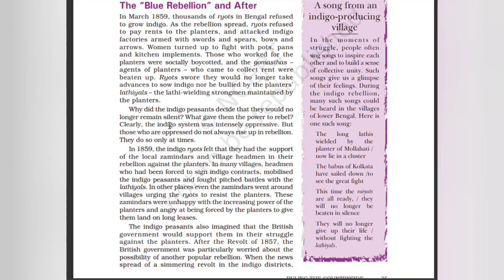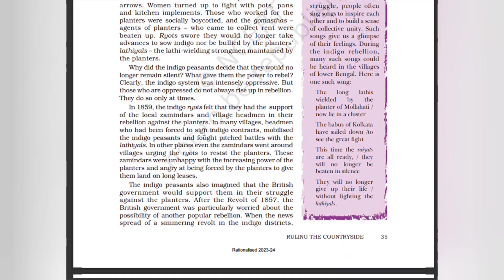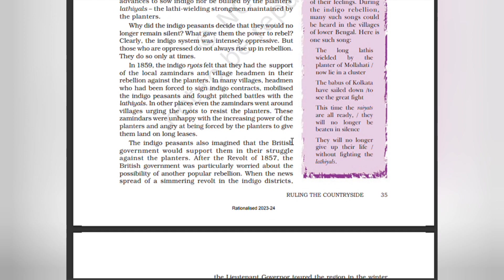What gave the peasants the power to rebel? Clearly the indigo system was intensely oppressive, but the oppressed do not always rise up in rebellion — they do so only at certain times. In 1859, the indigo ryots felt they had the support of local zamindars and village headmen in their rebellion against the planters. In many villages, headmen who had been forced to sign indigo contracts now helped the indigo peasants and fought pitched battles with the lathials — strongmen maintained by the planters. Even some zamindars sided with the ryots to resist the planters, angry at being forced to give land on long leases. Indigo peasants also believed the British government would support them, as after the revolt of 1857 the British were particularly worried about the possibility of another popular rebellion.